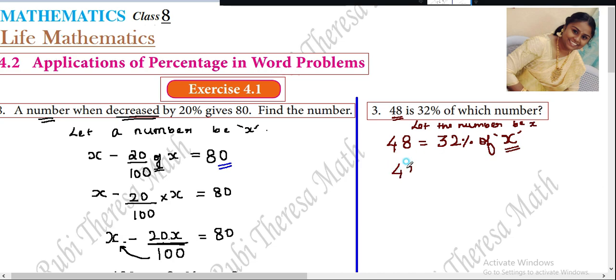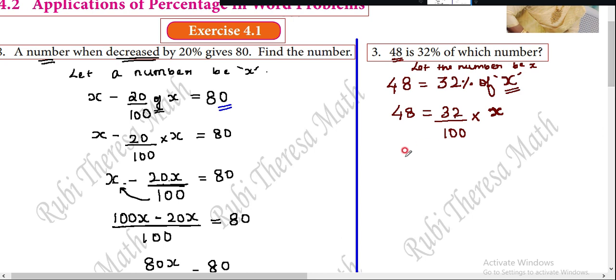Decrease, increase, any pattern is very simple. Let the number be x. So, 48 equals 32% of the number is 32 per 100. Per 100 is by 100. Of, of is equal to multiply. This is the number x. We want to show this number. This number is 48.